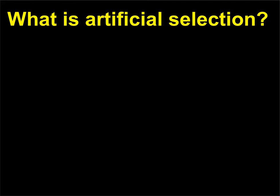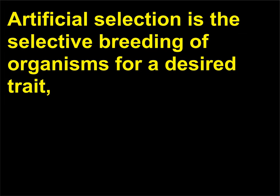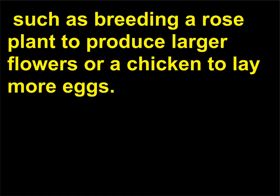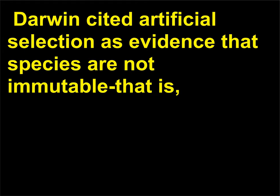What is artificial selection? Artificial selection is the selective breeding of organisms for a desired trait, such as breeding a rose plant to produce larger flowers or a chicken to lay more eggs. Darwin cited artificial selection as evidence that species are not immutable—that is, unable to be changed by selection.